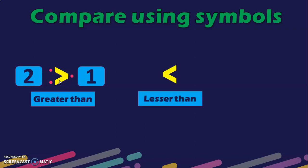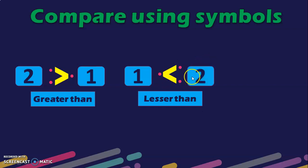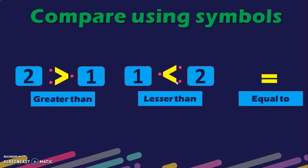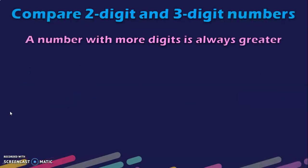Next, this is the lesser than symbol. On the left side we have 1 point and on the right side we have 2 points. Since 1 is lesser than 2, this symbol is for lesser than. Another way to remember it is that it resembles the alphabet L, and L is for lesser. Another symbol used for comparison is equal.